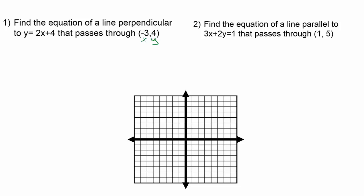Sometimes we'll need to use the slopes of parallel and perpendicular lines to write equations of lines. An example of that would be with this first problem I have on the left. Find the equation of a line perpendicular to y equals 2x plus 4 that passes through the point negative 3, 4.